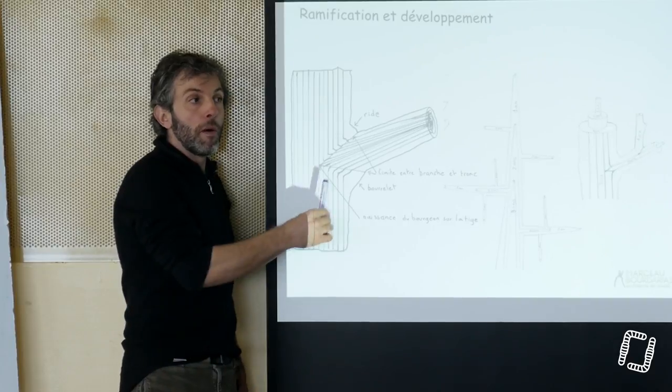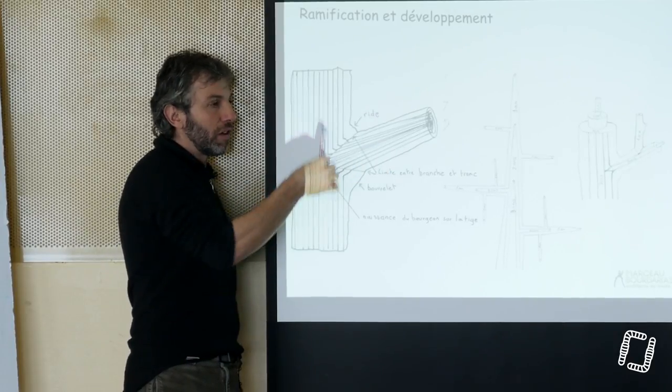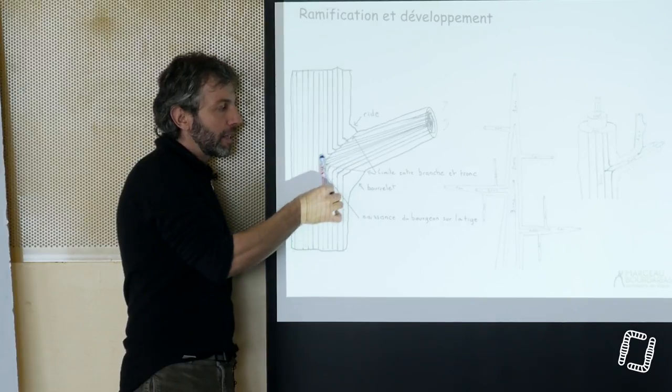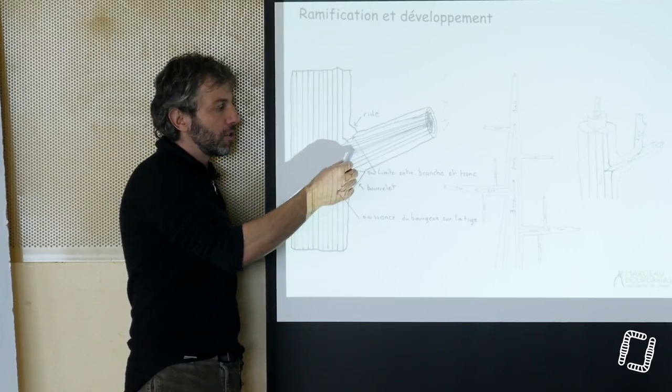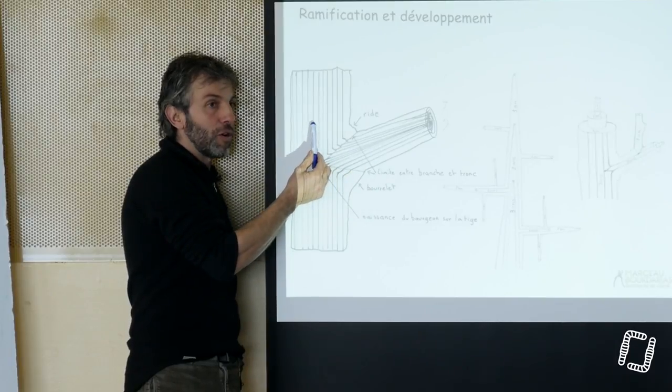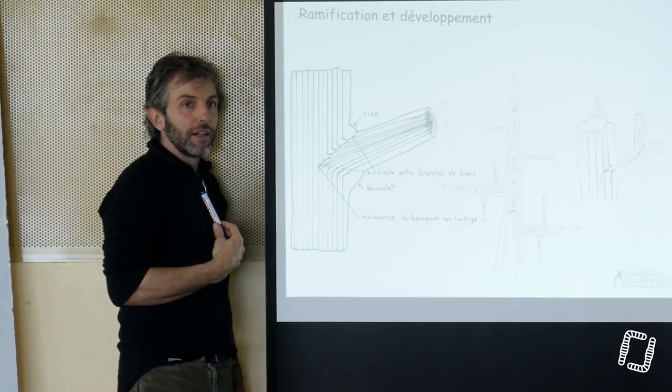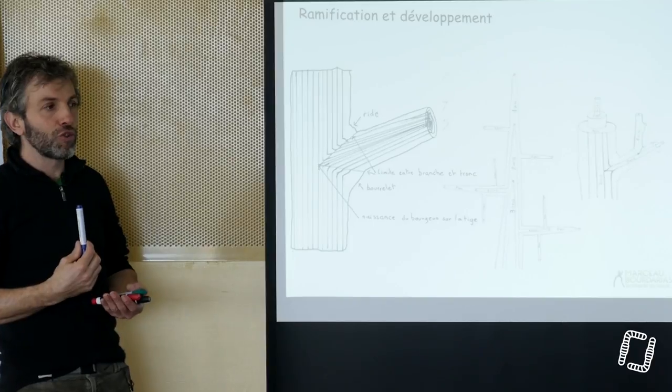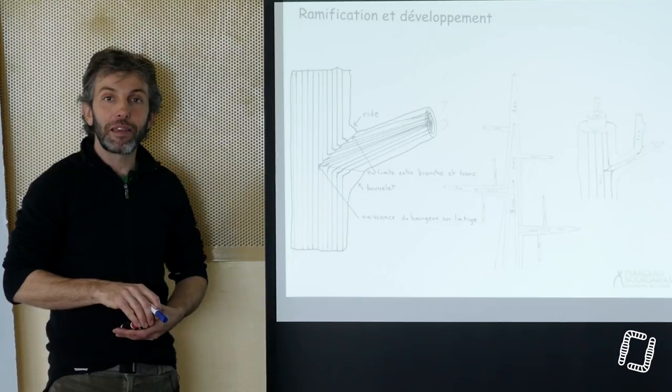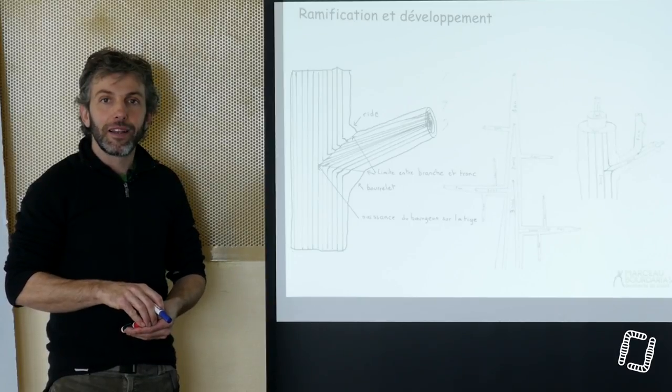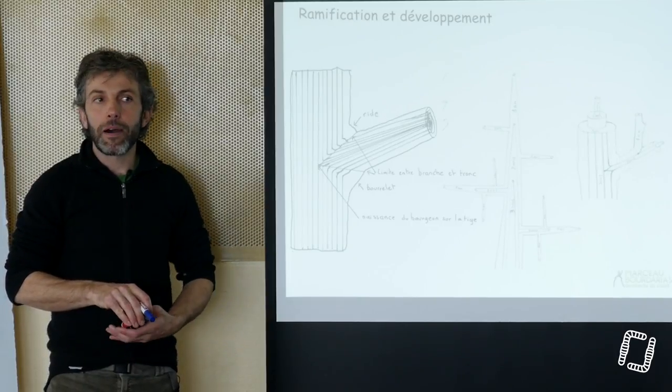C'est ce qui fait qu'au moment où on fait la coupe, il y a un tillage de tous les vaisseaux verticaux. D'ailleurs, génétiquement, cette branche-là et ce bois-là sont différents. Il faut considérer que chaque bourgeon qui naît sur une plante ligneuse, c'est un nouvel arbre qui pousse sur l'arbre. Les arbres, ce sont des colonies d'arbres, en fait.